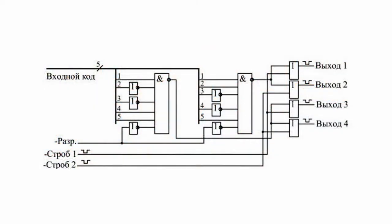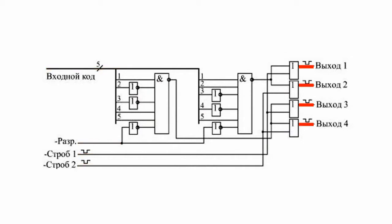For example, let's consider a rather complex combinational circuit that has 8 inputs and 4 outputs. The circuit recognizes two different 5-bit input codes when there is a zero signal at the enable input.